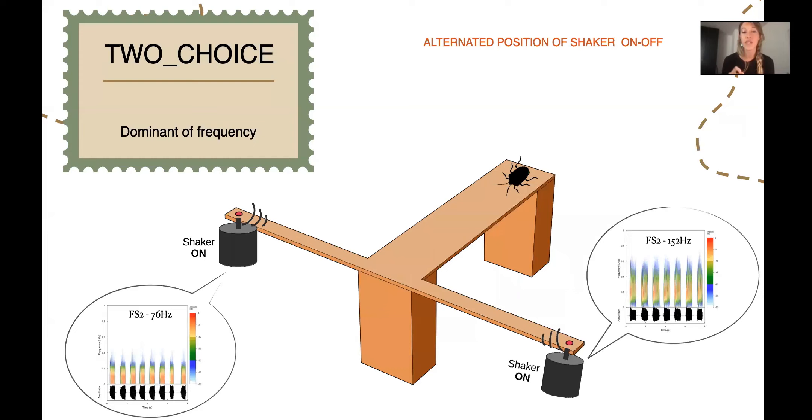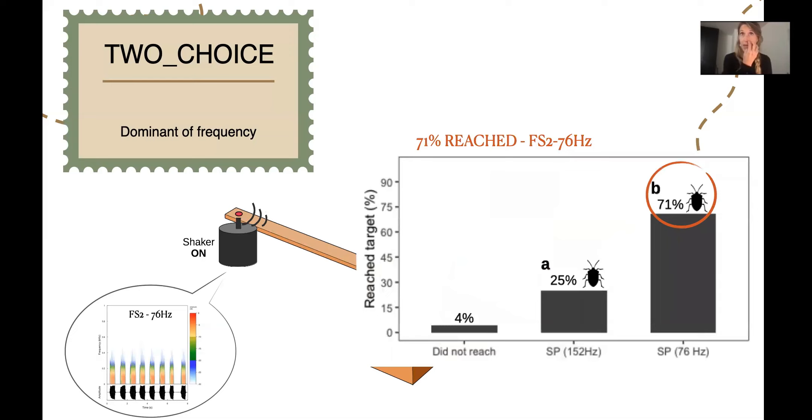In the second test, we assessed if males searched toward a preferred signal, FS2. But this time we gave the insects vibrations coming from two different sources. We had the two shakers on, and on one of the shakers we were emitting the FS2 with the dominant frequency on 76 hertz, and on the other shaker we had the FS2 with 152 hertz. In this experiment, we were testing if males would prefer the lower dominant frequency. In fact, we found that 71% of the animals reached the FS2 76.